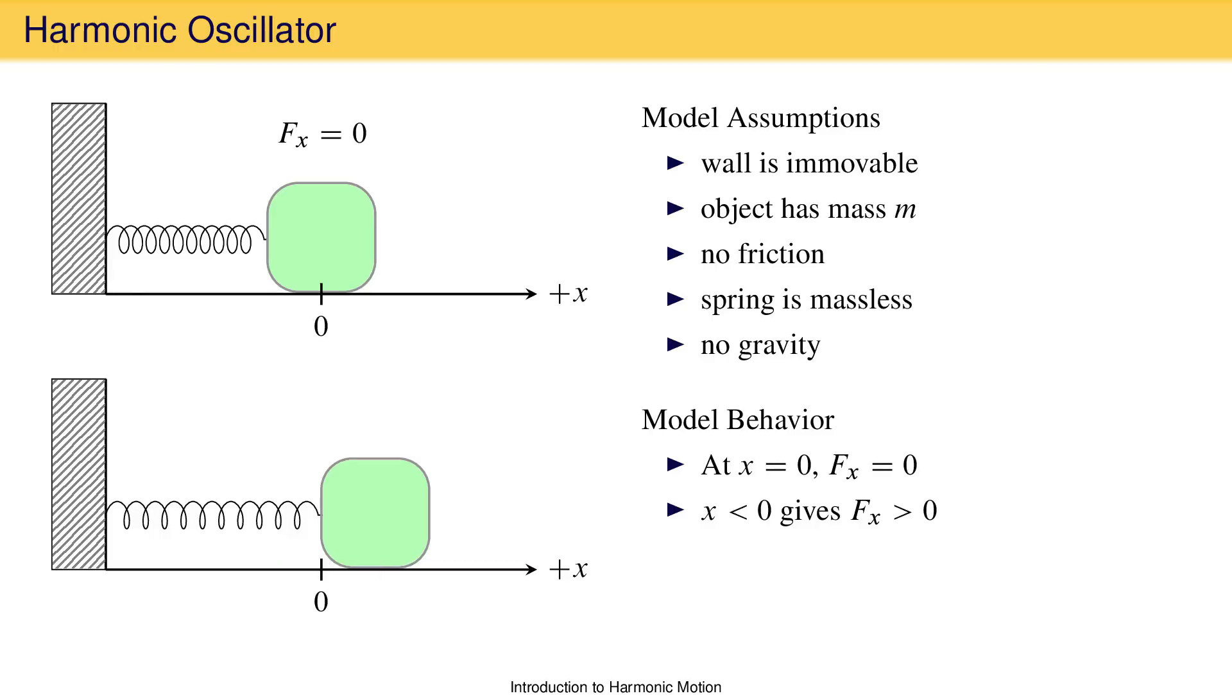causing the spring to be stretched compared to its length at equilibrium, and when the spring is stretched like this, it exerts a force on the mass that is in the negative x-direction. This force eventually brings the mass to a stop because it opposes the motion to the right.